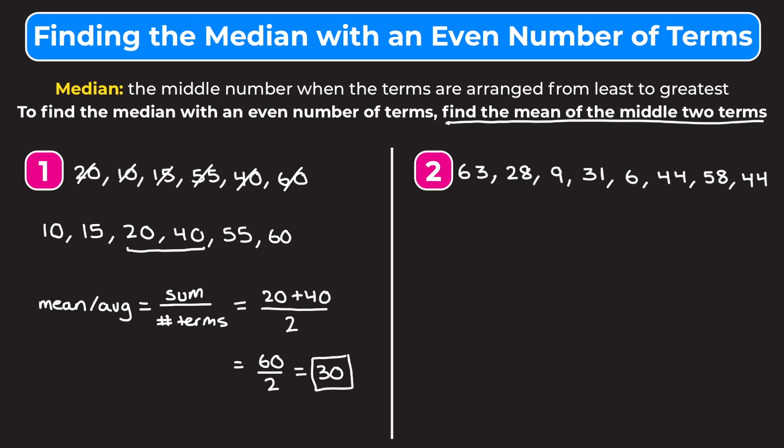You could also think of the average of these two numbers as the middle of the two numbers. If you don't want to use the average equation, you could think what number is directly in the middle of 20 and 40, and you may realize that it's 30. So you can also find the median that way.